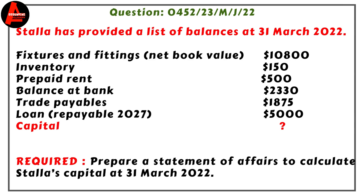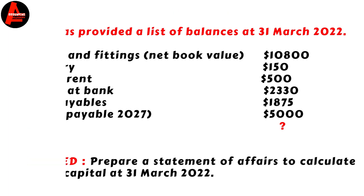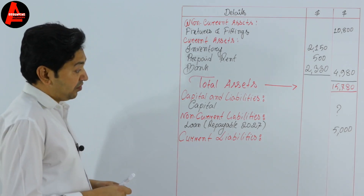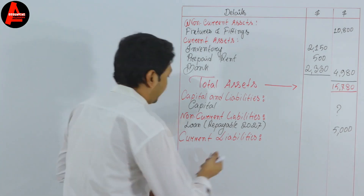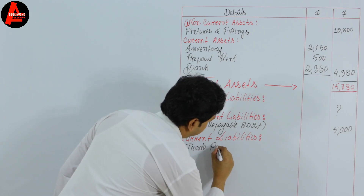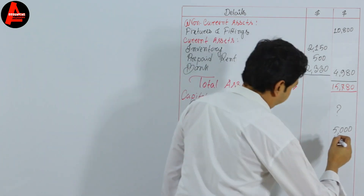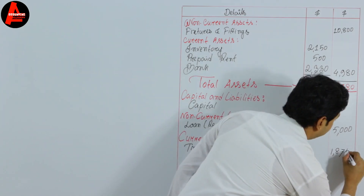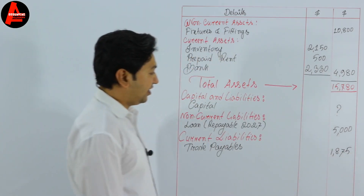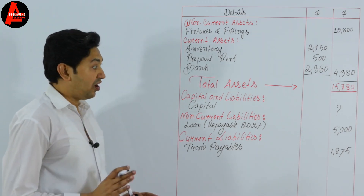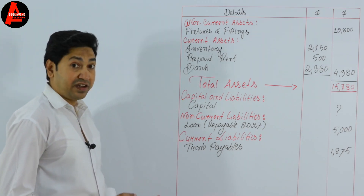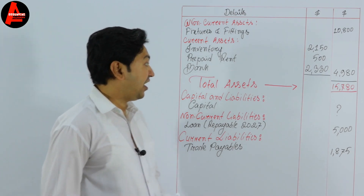For current liabilities, we have trade payables of $1,875. We write trade payable with the amount $1,875. We have now recorded all assets and liabilities from the question.